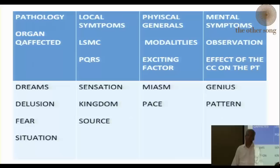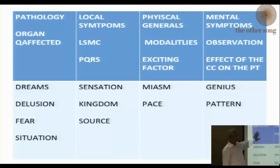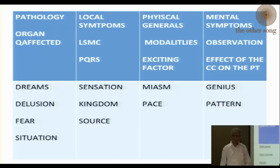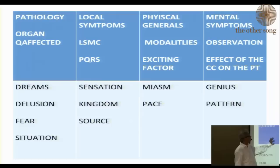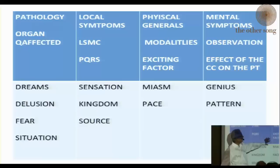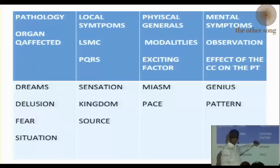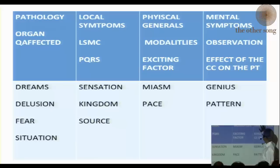Many homeopaths will prescribe on the pathology only. Many books have been written about it. For example, best known is Burnett. Burnett used to prescribe mainly on pathology — if you had ringworm, you got Bacillinum straight away; if you had gout, you got Urtica urens; if you had a liver tumor, you had Carduus marianus. Some people prescribe on the local symptoms using the repertory. Some people prescribe on general modalities and causation — ailments from vaccination, give Thuja; ailments from grief, give Ignatia. Some people prescribe on mental symptoms alone.